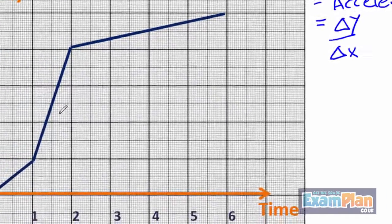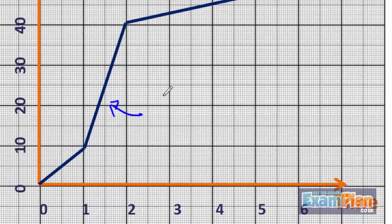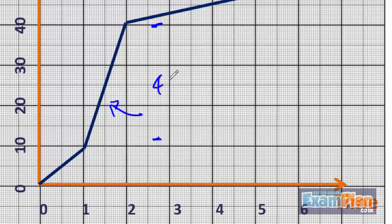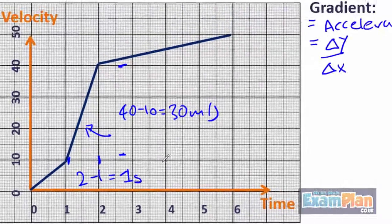For this section, the change in y is 40 m per second minus 10 m per second, so 30 m per second. And here, the change in x is 2 seconds minus 1 second, so 1 second.